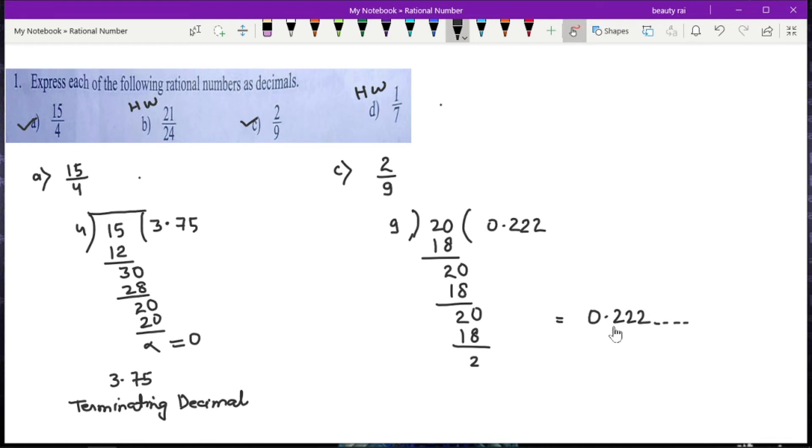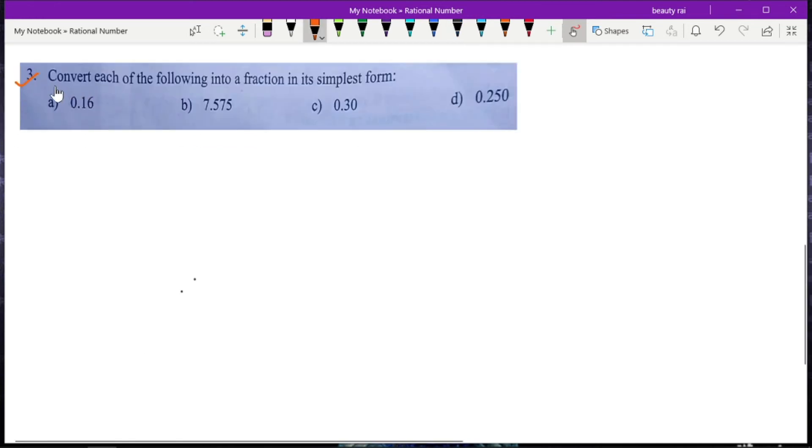Here we got a repeating block of digits in the quotient, so we can represent this as 0.2 with a bar over the 2. Your answer is 0.2 bar, and this type of decimal is known as a non-terminating recurring decimal.